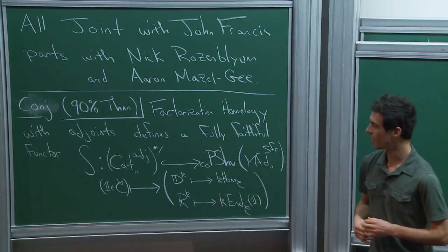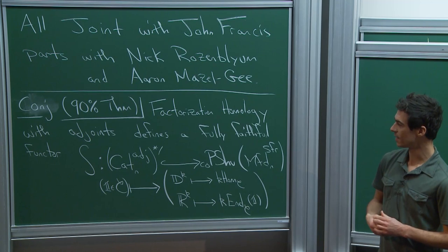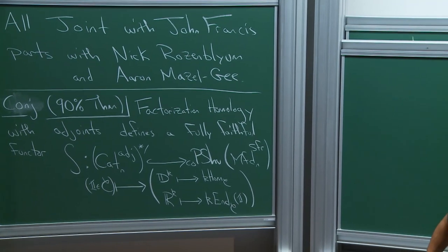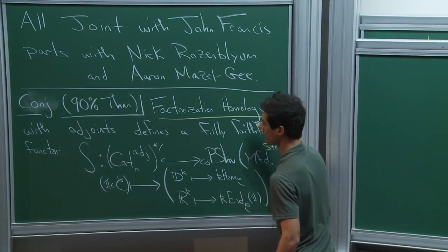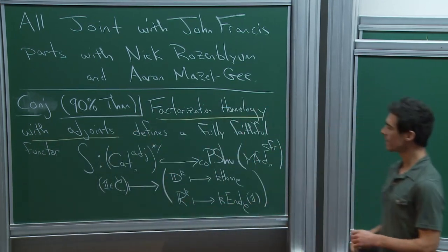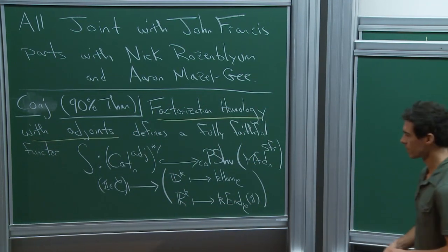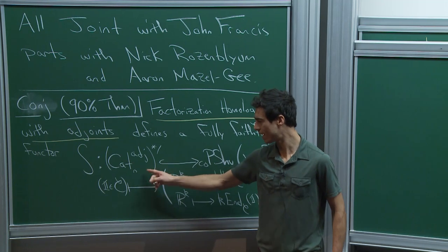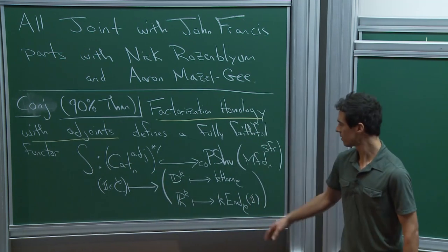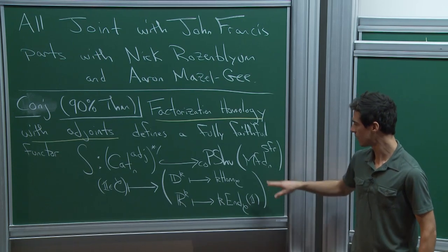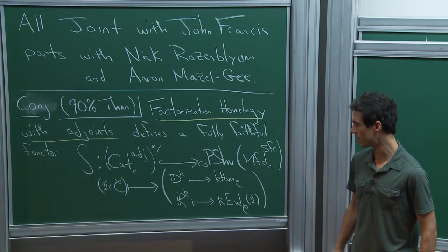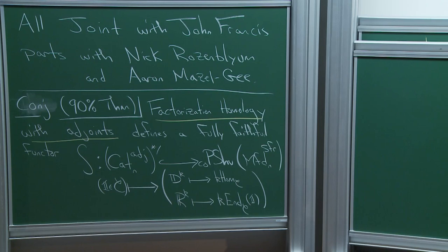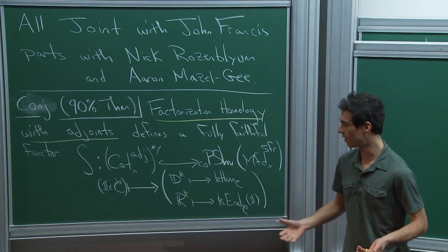This result says the following. Factorization homology with adjoints—a term which will be described in a bit—defines a fully faithful functor from an infinity category of pointed infinity n-categories with adjoints, to space-valued functors on a category of solidly framed stratified spaces. That's a lot of jargon, and much of the talk will be unpacking it.